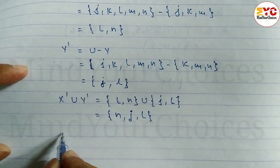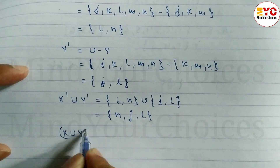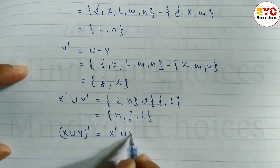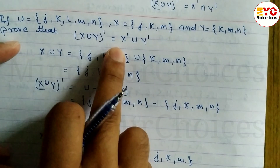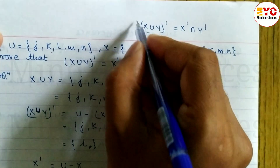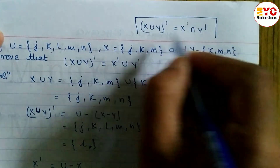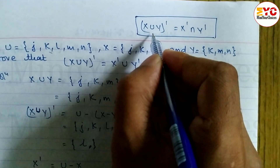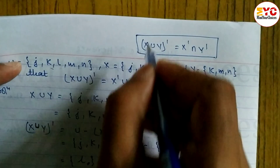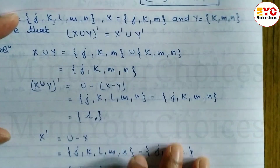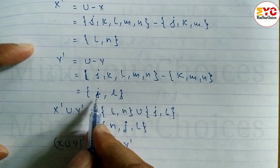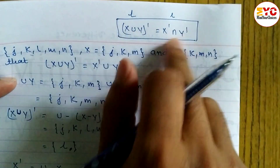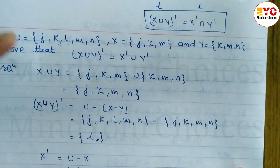We can see that X union Y complement equals {L}, while X complement union Y complement equals {J, L, N} — these are not equal. There is a print mistake in the question; the correct property is X union Y complement equals X complement intersection Y complement. Let's verify: X complement intersection Y complement is {L, N} intersection {J, L}. The common element is L, so the result is {L}, which equals X union Y complement. This proves the correct property.